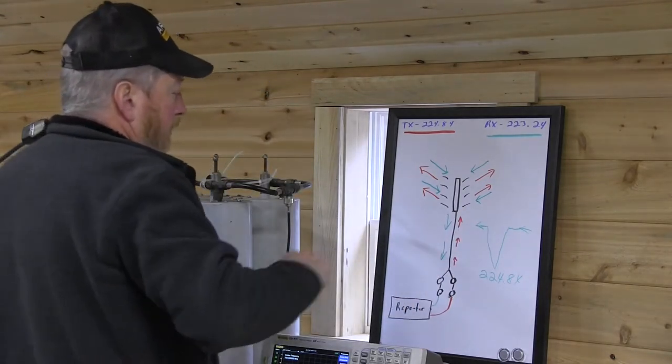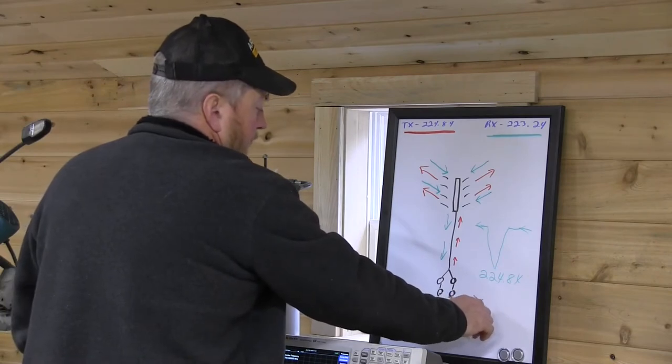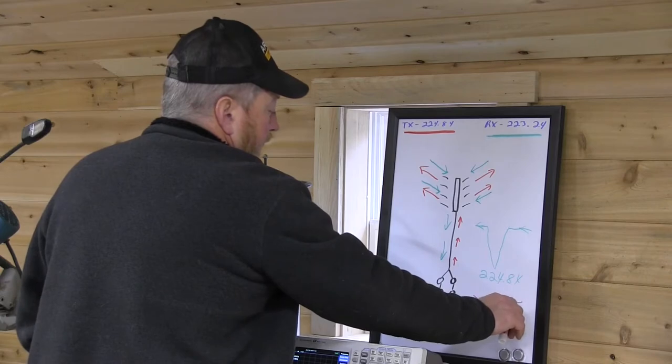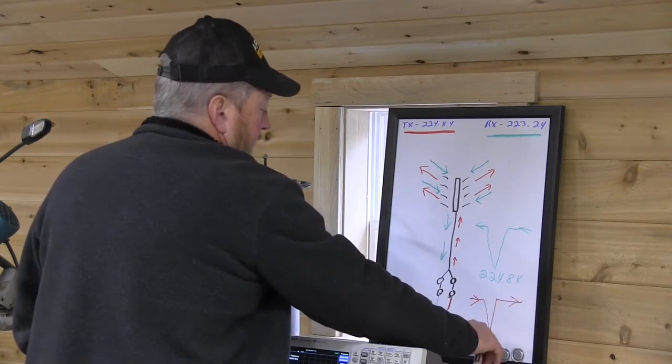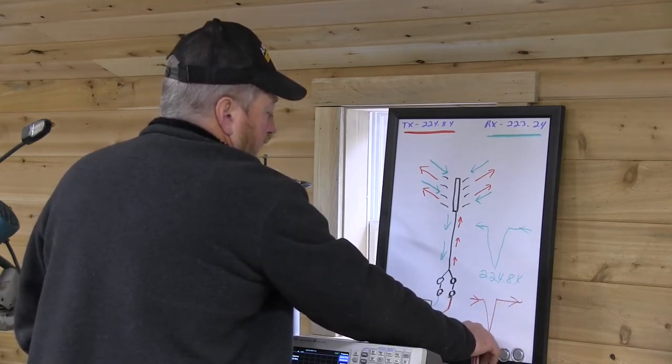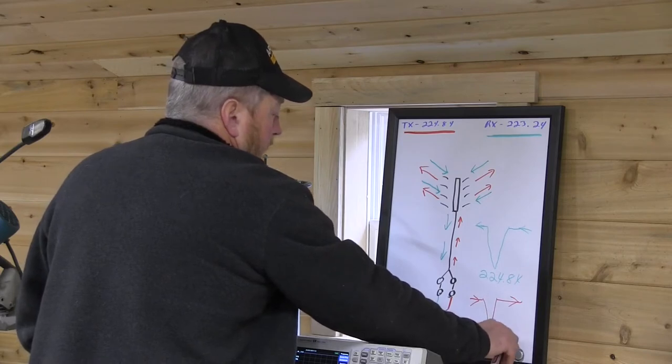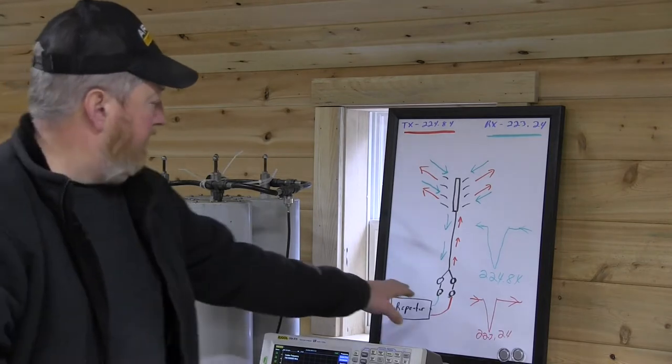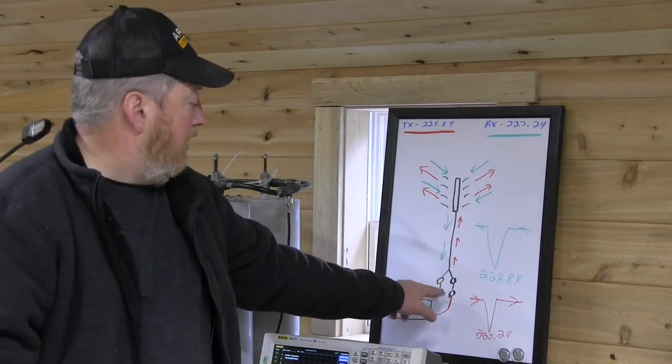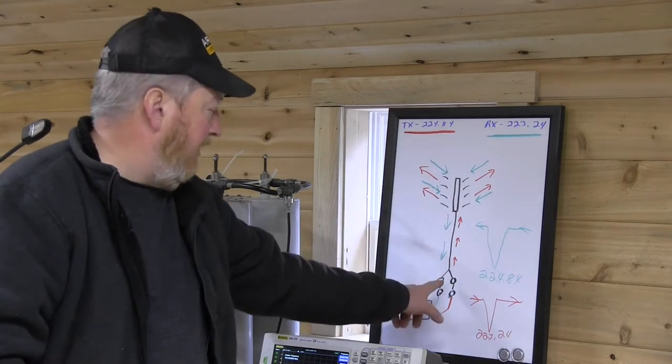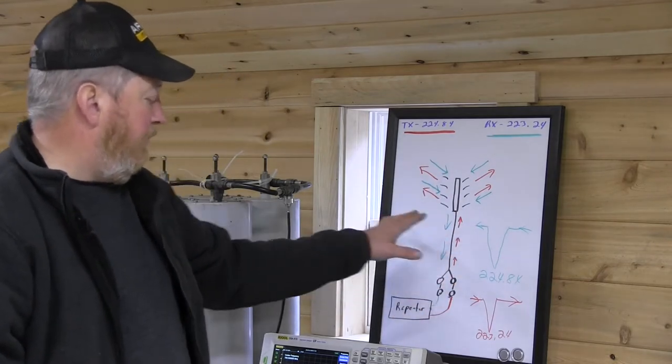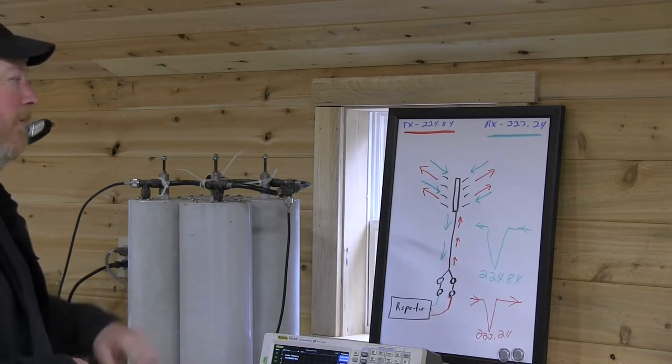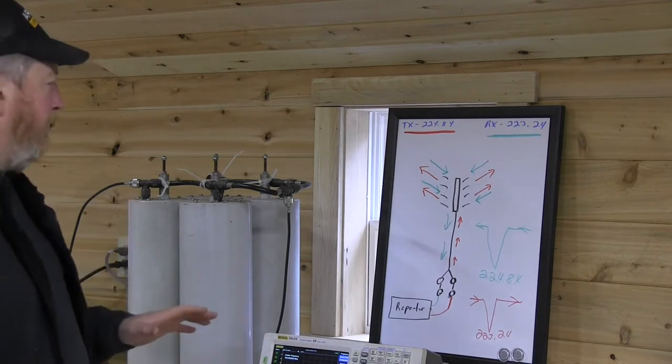On the transmit side going out, we do basically the same thing going out to the antenna, but it would be at the 223.24. So they're essentially keeping each signal from each other and sharing the same antenna. There's a whole lot of videos on explaining that more in depth. I just wanted to give you a brief primer on what's happening.